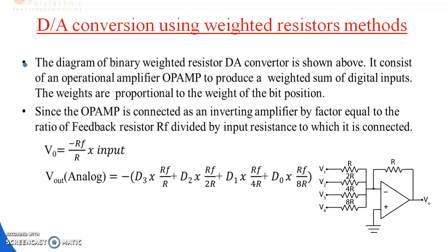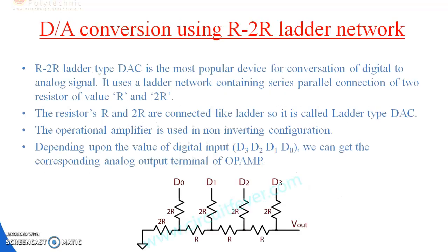The resistor method uses parallel resistors R, 2R, 4R, and 8R. The total output voltage is Vout. The DAC using the R-2R ladder method: the R-2R ladder type DAC is the most popular device for conversion of digital-to-analog. It uses a ladder network containing series and parallel connections of two resistors having values R and 2R.